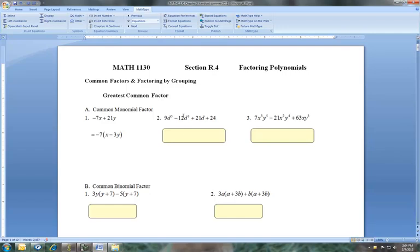Next one I have got one, two, three, four terms. First thing I'm going to look at is see if there's a number that they all have in common. And it looks like I would have a three. Variable wise they do not all have a d, so the only thing I can actually factor out common monomial wise is a three. So I'm going to factor out a three. In parenthesis, I'm going to factor out a three from all of these. I should have 3d to the fifth minus 4d cubed plus 7d plus 8.